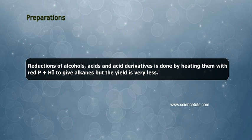Reduction of alcohols, acids, and acid derivatives is done by heating them with red phosphorus plus HI to give alkanes, but the yield is very less.